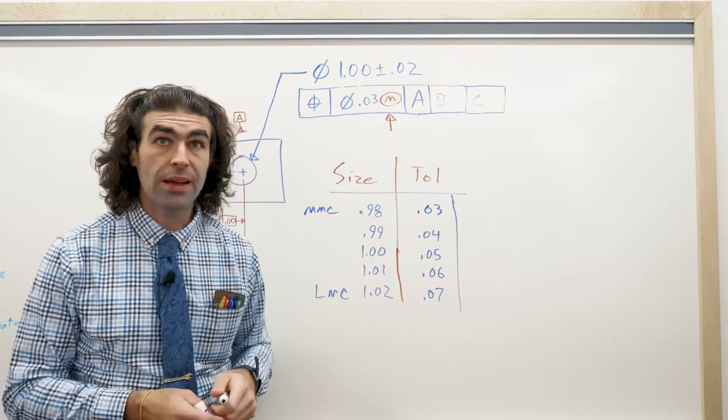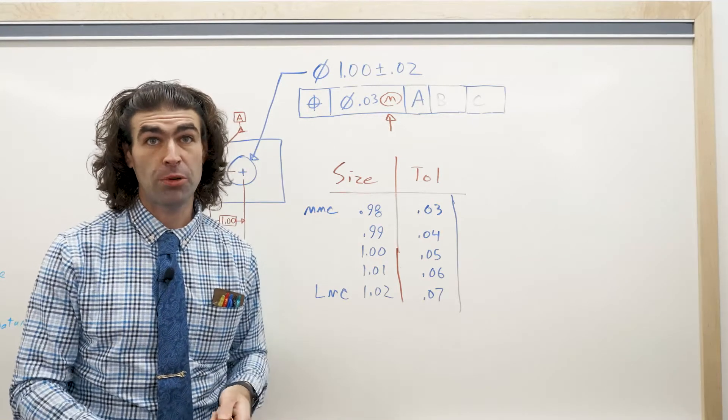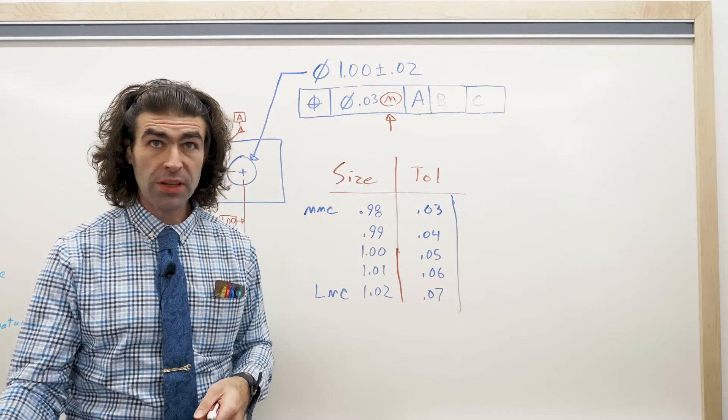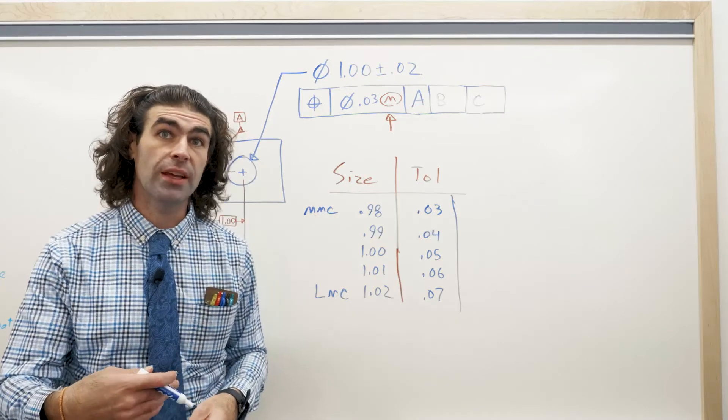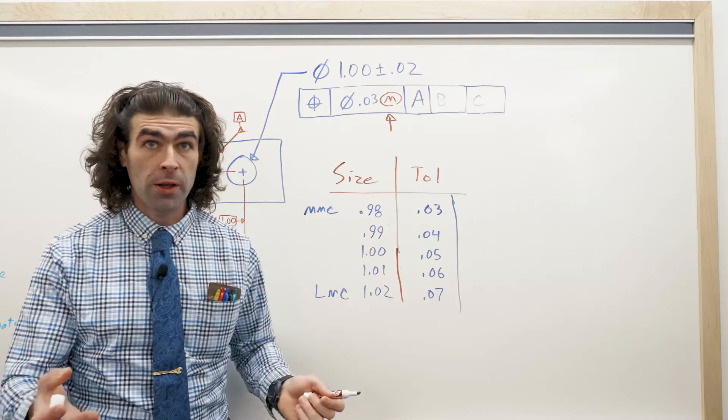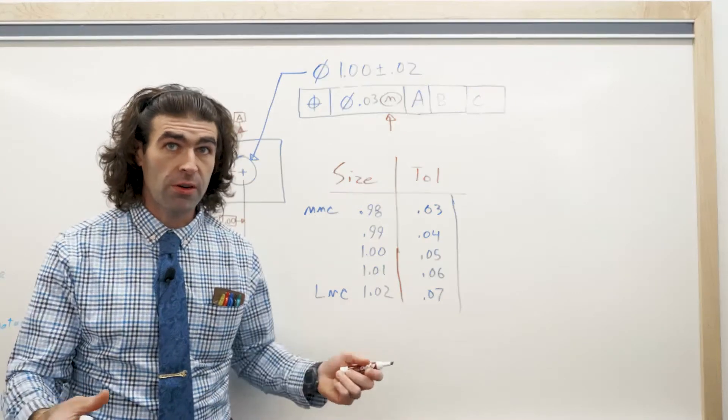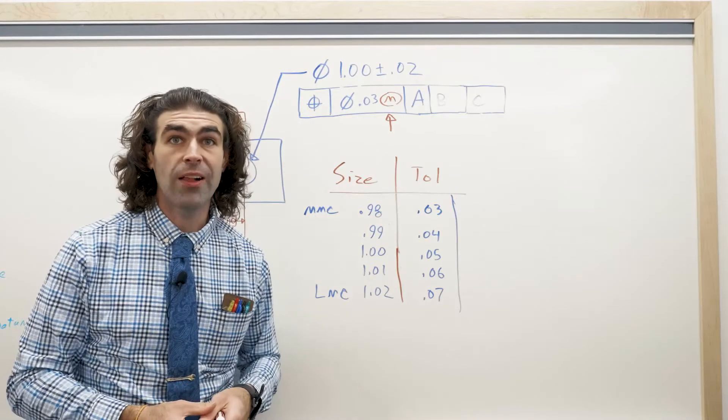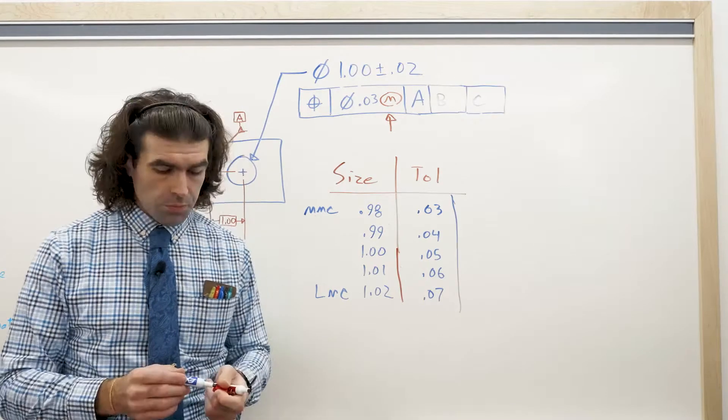So, that's all bonus tolerance is. It's just the difference between the MMC and what the part actually is. So, for a hole, you get rewarded by making the hole larger, you get more positional tolerance on that hole.